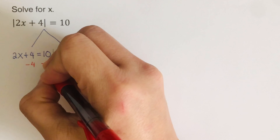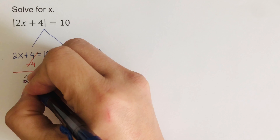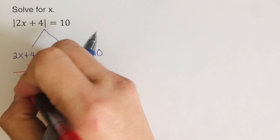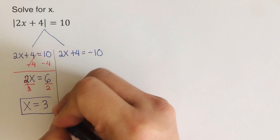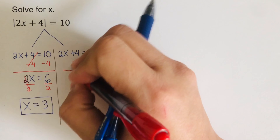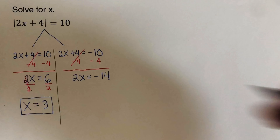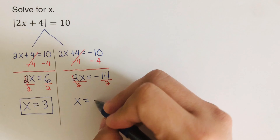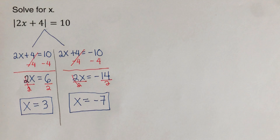Solving the first equation: subtract 4 from both sides, giving 2x = 6; divide both sides by 2, so x = 3. For the second equation: subtract 4 from both sides, giving 2x = -14; divide both sides by 2, so x = -7. These are the two solutions.